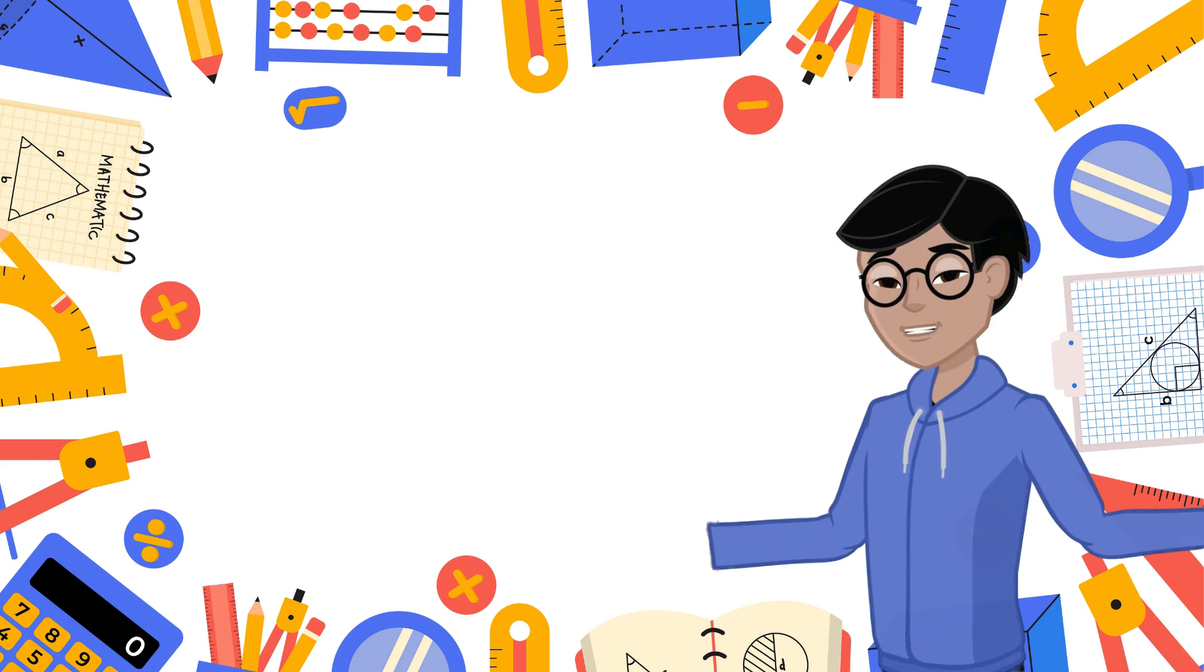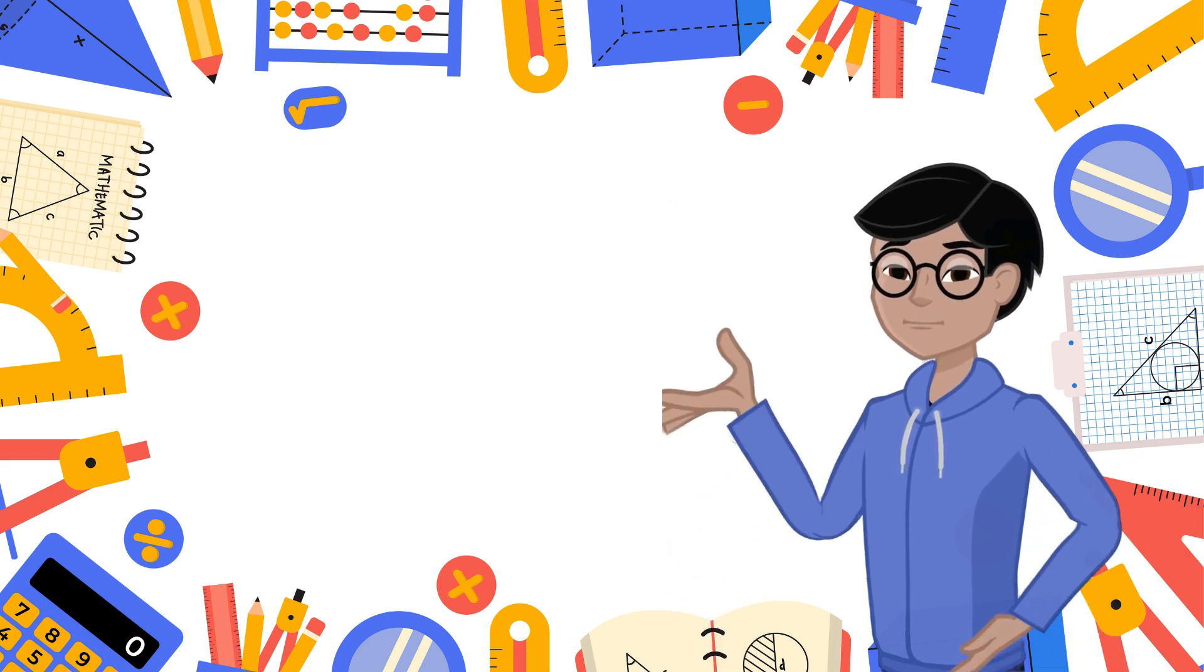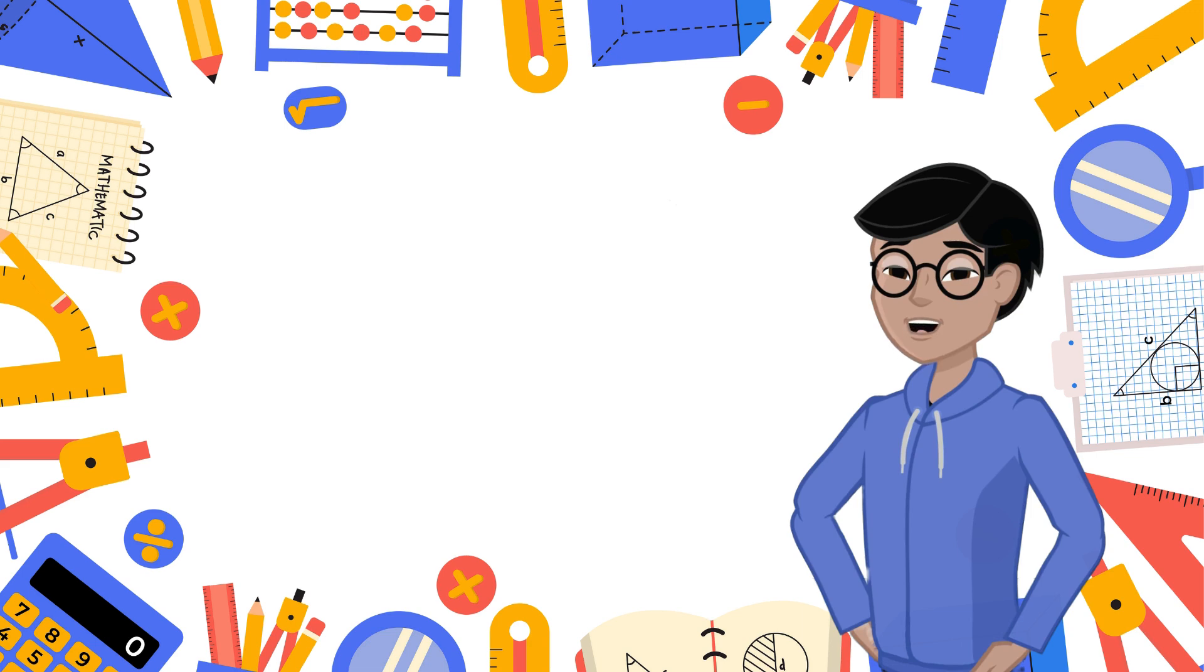Our first game is called Number Knockout. Here's how it works. I'm going to give you a series of math problems. Your job is to solve them as quickly as possible. Grab a piece of paper and a pencil, and let's see how many you can get right. Ready?